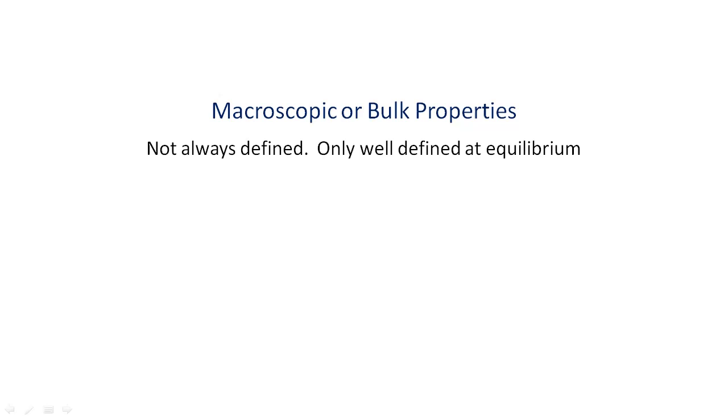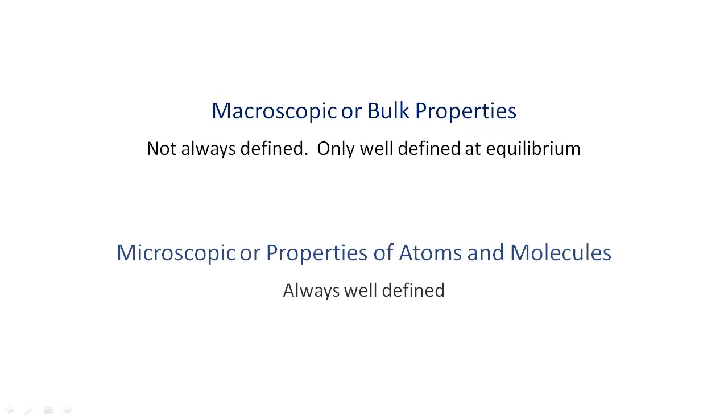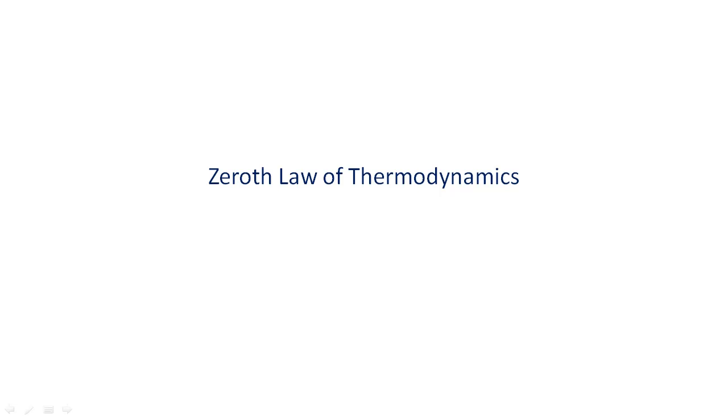Contrast this with the properties of atoms and molecules of the substance which are always well-defined. Now suppose a system is in thermodynamic equilibrium and we can assign its temperature. To have a globally acceptable measure of temperature we use the zeroth law of thermodynamics. I am sure most of you can state the zeroth law of thermodynamics but do you know why it is so essential in the context of defining a universal measure of temperature?